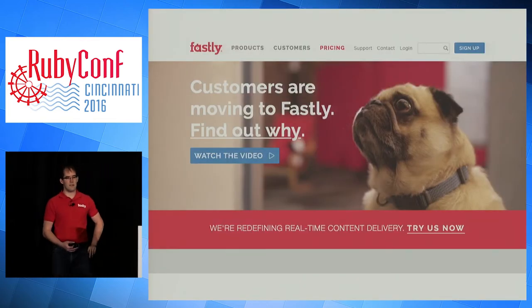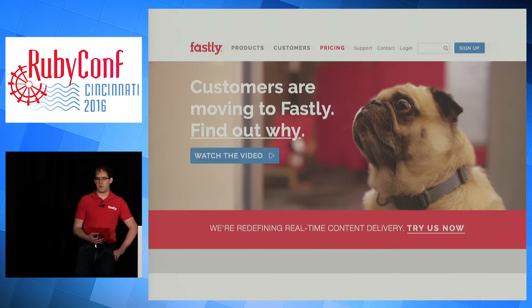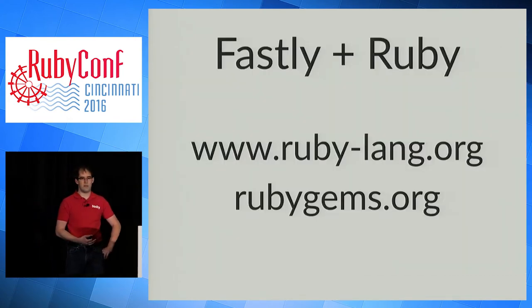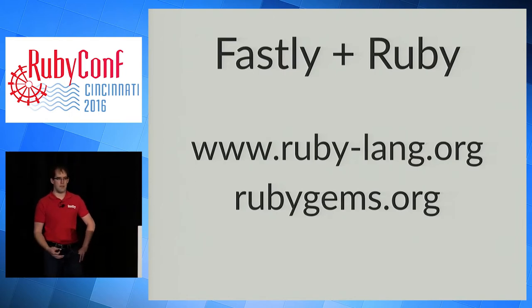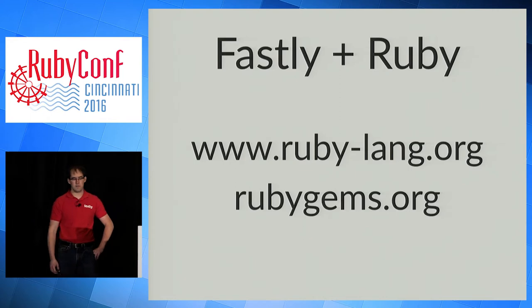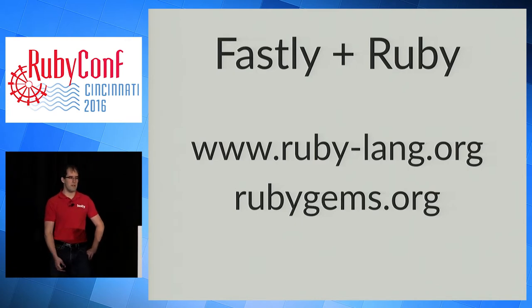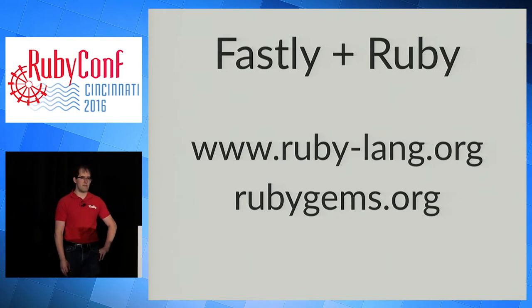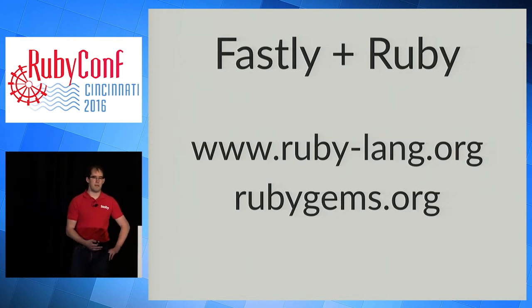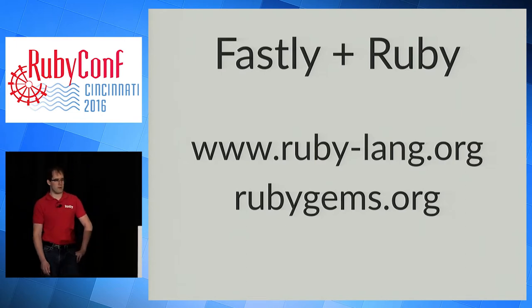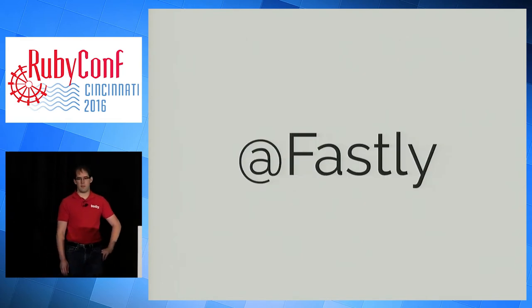I work for Fastly, a real-time content delivery network. This is our amazing website, Fastly.com, with Gordo, one of the dogs of Fastly. Fastly supports many open source projects, including hosting the Ruby Lang website, Ruby version downloads, and supports RubyGems. Last month, Fastly served 425 terabytes of data and 8 billion requests supporting RubyGems for free. I'd also like to highlight the work of David Radcliffe and the rest of the rubygems.org team for speeding up gem downloads, especially for users outside the United States. You can follow Fastly on Twitter.